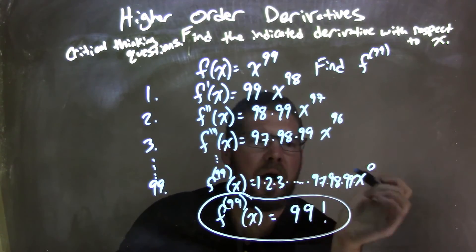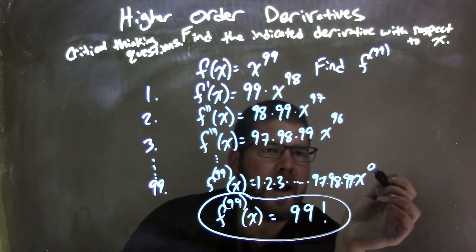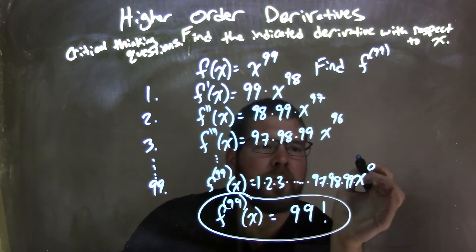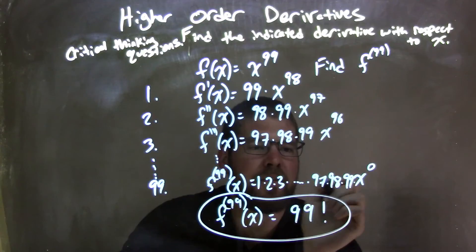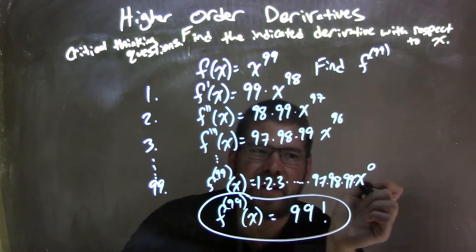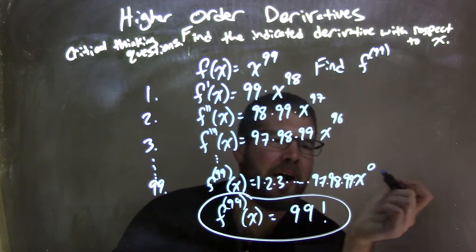So I knew if I took the 99th derivative, I would take my exponent subtracted by 99. So I had x to the zero power, and then the previous exponent would have been x to the first. And so we would have every single number multiplied out, 1, 2, 3, 4, 5, 6, all the way up to 97, 98, 99, times x to the zero power. Well, x to the zero power is just 1.